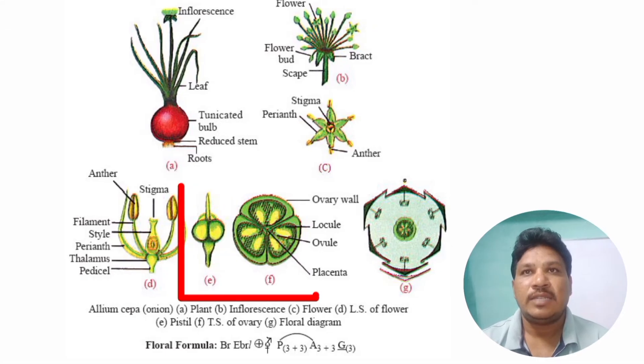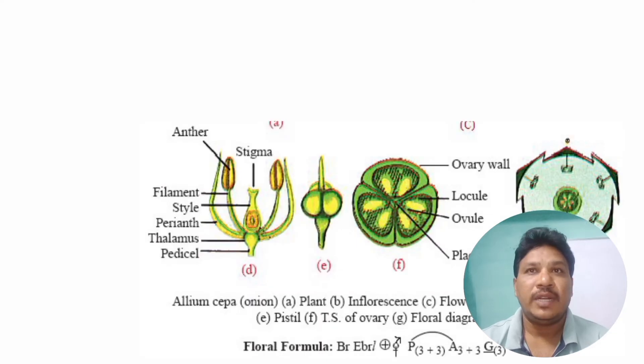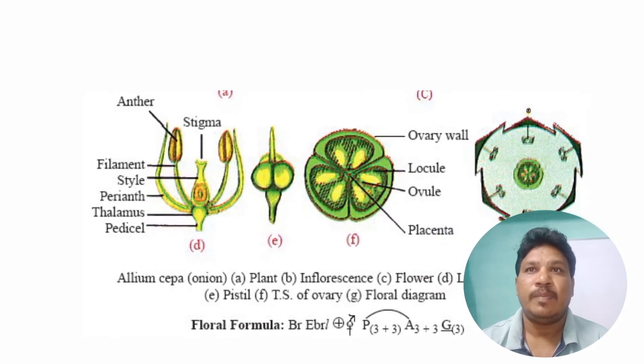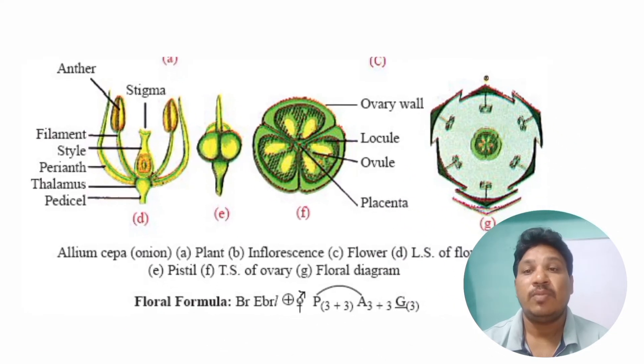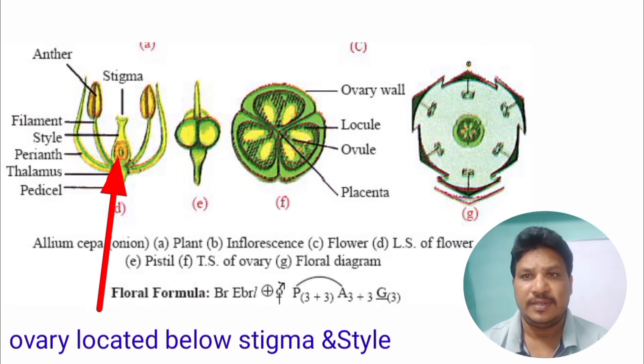Ovary is the part of the pistil that contains ovules and produces seeds. The ovary is located at the base of the flower, below the stigma and style.